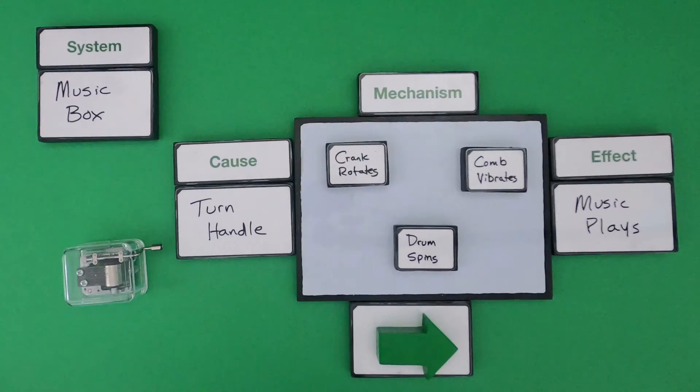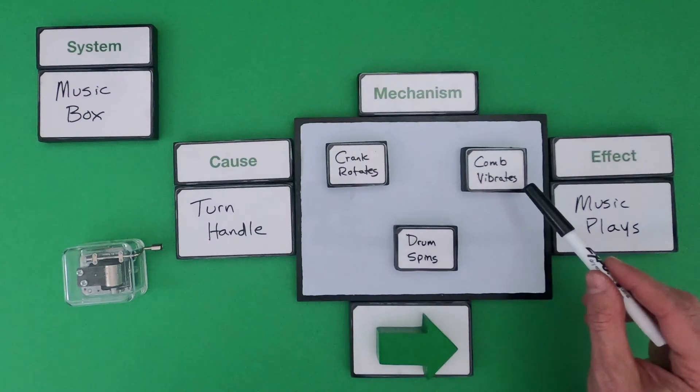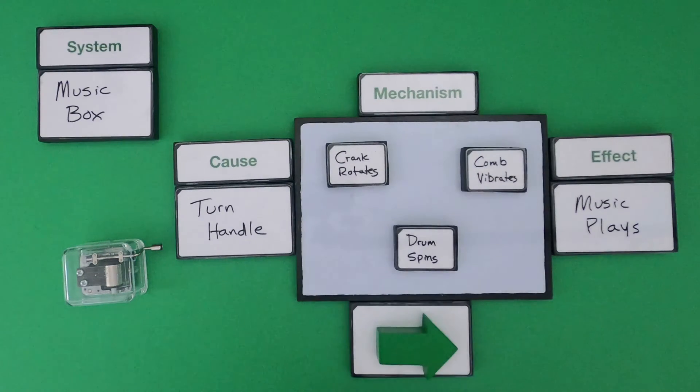So now I've put these big three events of the crank rotating, the drum spinning, and the comb vibrates within the mechanism. The only thing I'm missing is that causal relationship that shows the sequence of events. And so I would draw that like this.